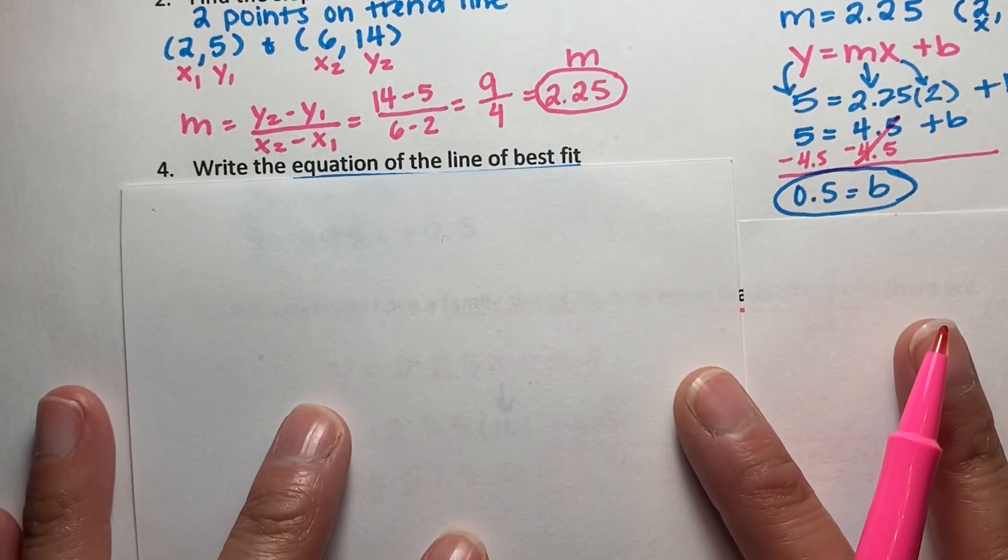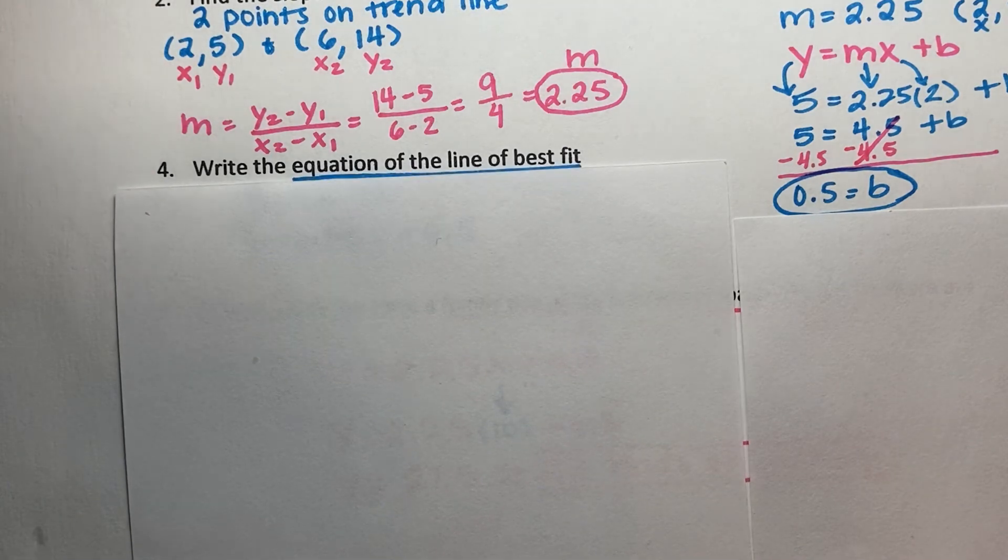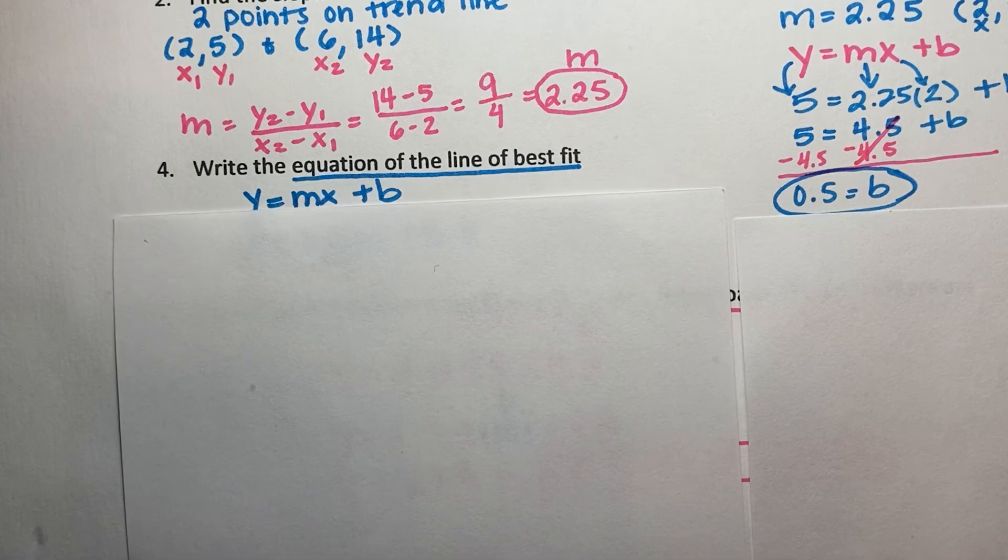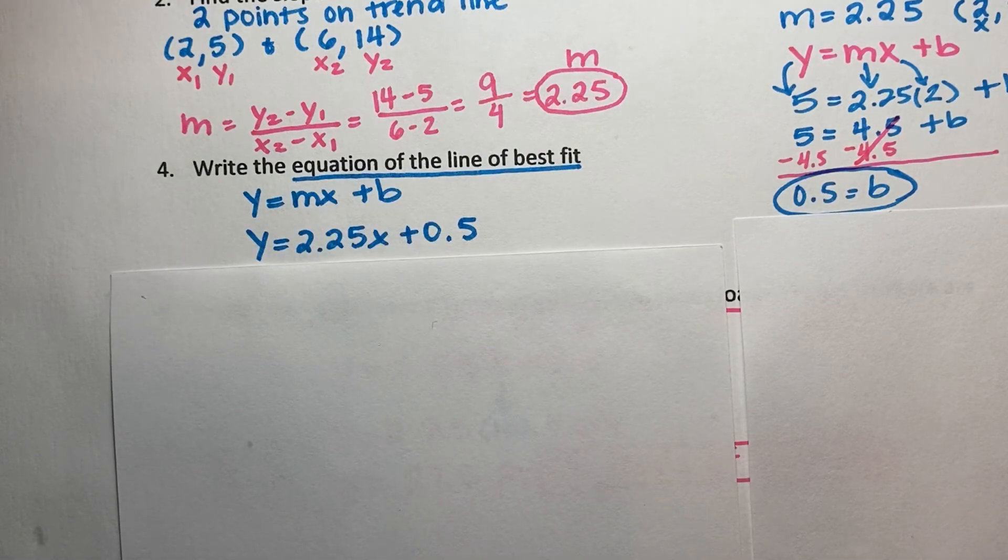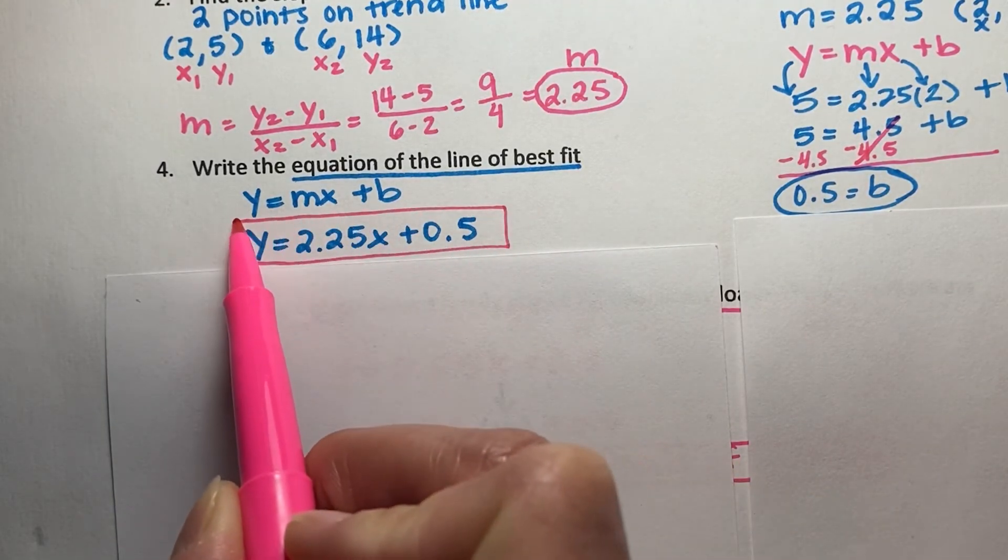So the next step is to write the equation of the line of best fit. So we are coming up with our line of best fit by hand. We're doing this by hand, so it's not going to be as accurate by using the calculator. So when I do that, I'm going to take my m and b and write this as an equation. y equals mx plus b. I now substitute m for 2.25 and b for 0.5. So this would be my equation for this model.